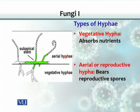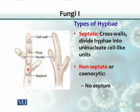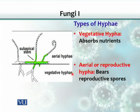There is another division of hyphae: vegetative hyphae versus aerial or reproductive hyphae. Vegetative hyphae function like roots — their job is to absorb nutrients — while aerial or reproductive hyphae bear those reproductive spores. So hyphae are classified two ways: based on their septum as septate or non-septate, and based on their function as vegetative or aerial/reproductive.